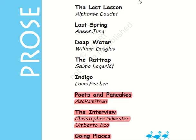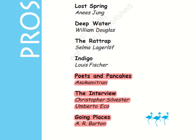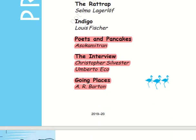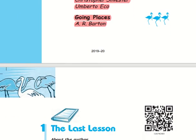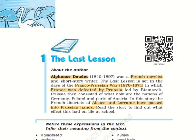Hello friends, today we are covering the Flamingo book of class 12th, the prose part, and we are starting with the last lesson today. But before we start the last lesson, let us take a look at the deleted part which includes 'Poets and Pancakes,' 'The Interview,' and 'Going Places.' So let's begin.